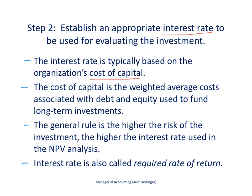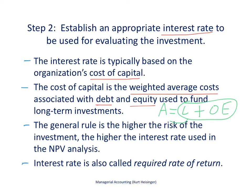How do we find the cost of capital? It is typically the weighted average costs associated with the debt and equity of our company. Think of the balance sheet equation: assets equals liabilities plus owners' equity. The funds on the right side — long-term debt and equity — are used to purchase assets, which hopefully produce revenues and profit. The cost of capital is the cost of those long-term debt and equity funds, and it is typically some kind of average of the two.